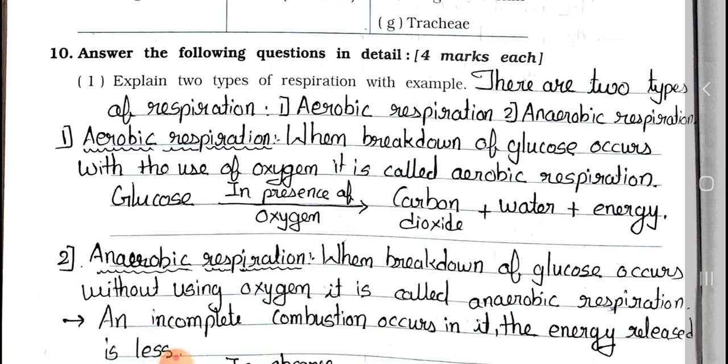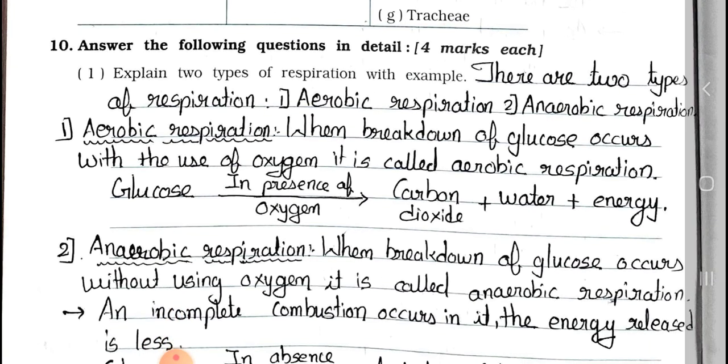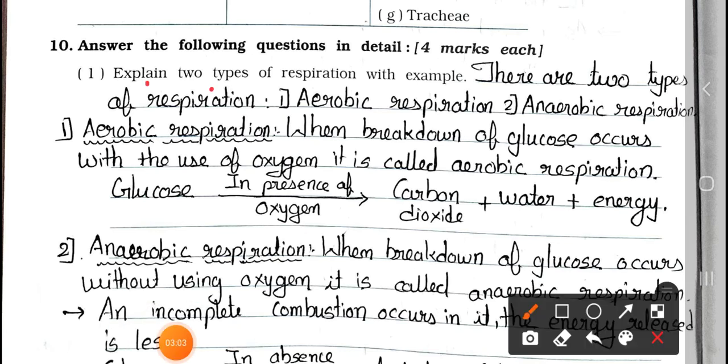Now see question 10. Answer the following questions in detail. It carries four marks each. See question number 1: Explain two types of respirations with example. Answer: There are two types of respiration. First one: aerobic respiration, and second one: anaerobic respiration. Number 1: Aerobic respiration. When breakdown of glucose occurs with the use of oxygen, it is called aerobic respiration. Glucose in presence of oxygen gives carbon dioxide plus water plus energy.